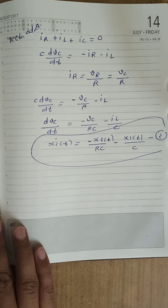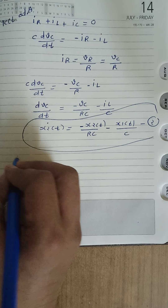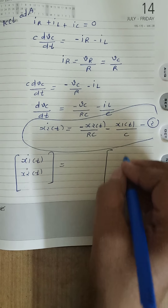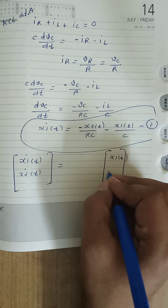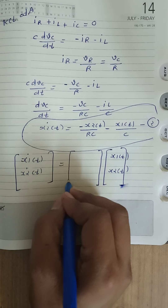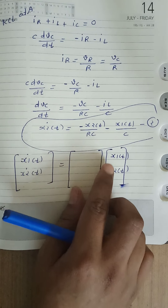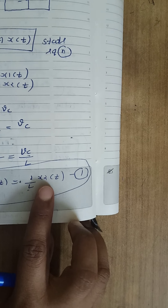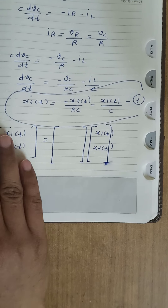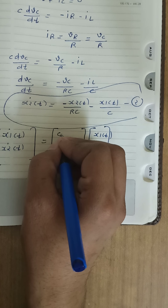Now the two state equations, first and second, can be combined into a single matrix state equation. We write x1 dot and x2 dot equal to the state variables x1 and x2. Let us see how we can define matrix A according to the coefficients of x1 and x2 from the first and second equations. In the first equation, the coefficient of x1 is 0 and the coefficient of x2 is 1 by L. So in matrix A, the first row has first element 0 and second element 1 by L.